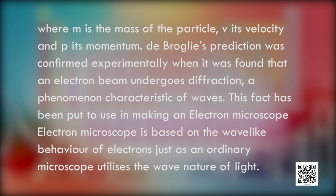The electron microscope is based on the wave-like behavior of electrons, just as an ordinary microscope utilizes the wave nature of light. An electron microscope is a powerful tool in modern scientific research because it achieves a magnification of about 15 million times. According to de Broglie, every object in motion has a wave character. The wavelengths associated with ordinary objects are so short because of their large masses that their wave properties cannot be detected.